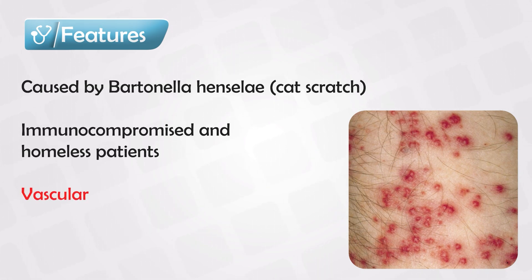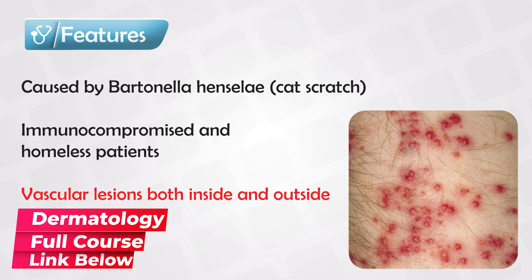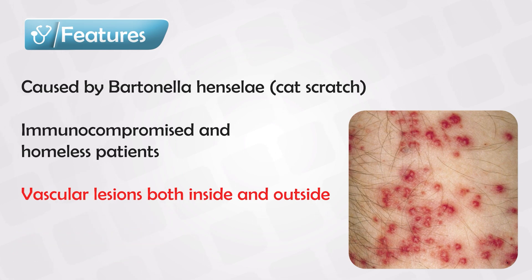Once the bacteria disseminates into the body, it will cause capillary hyperproliferation all over the body, inside and out. So we will have these small vascular tumors inside in the organs like the liver and the kidneys, and outside in the skin.